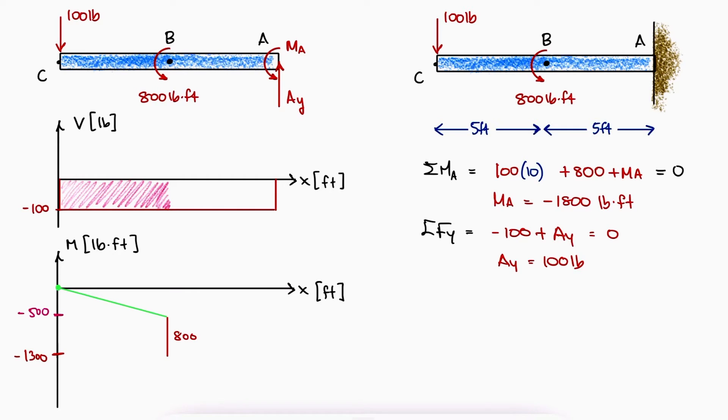Because remember, in the bending diagram, we plot the reaction internal moments caused by the external loads, so a positive couple of 800 pound-feet causes a clockwise and therefore negative reaction that moves the bending plot downward, and then with the same slope of minus 100 from B to A, we subtract another 500 pound-feet, reaching a value of minus 1800 pound-feet.